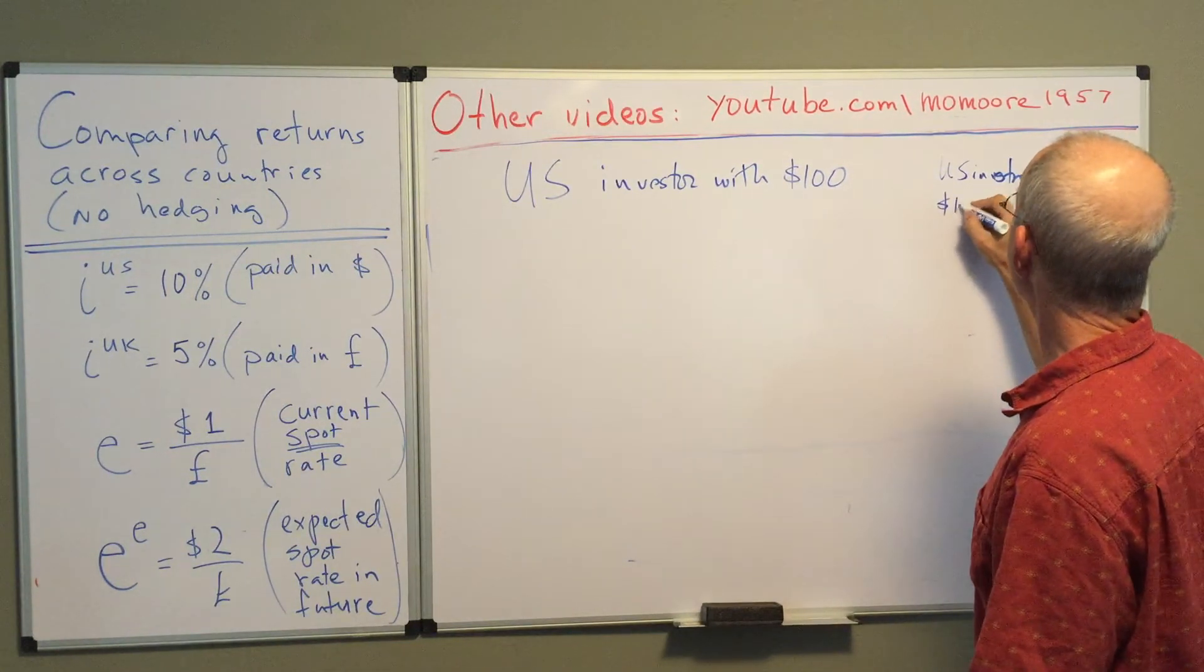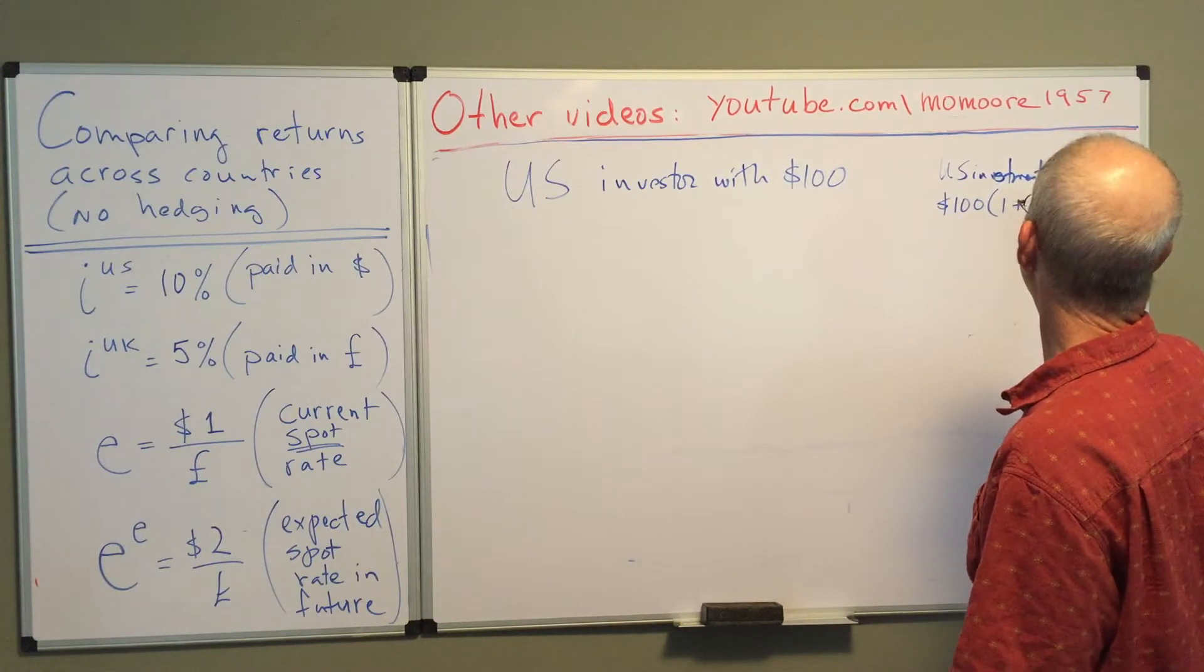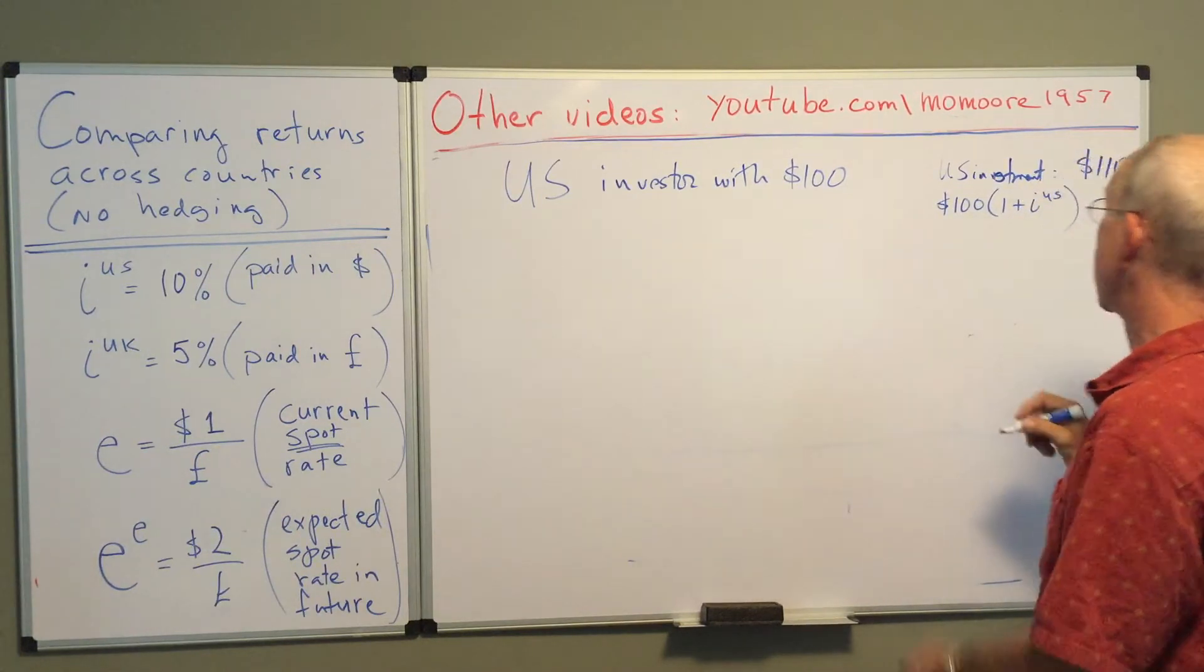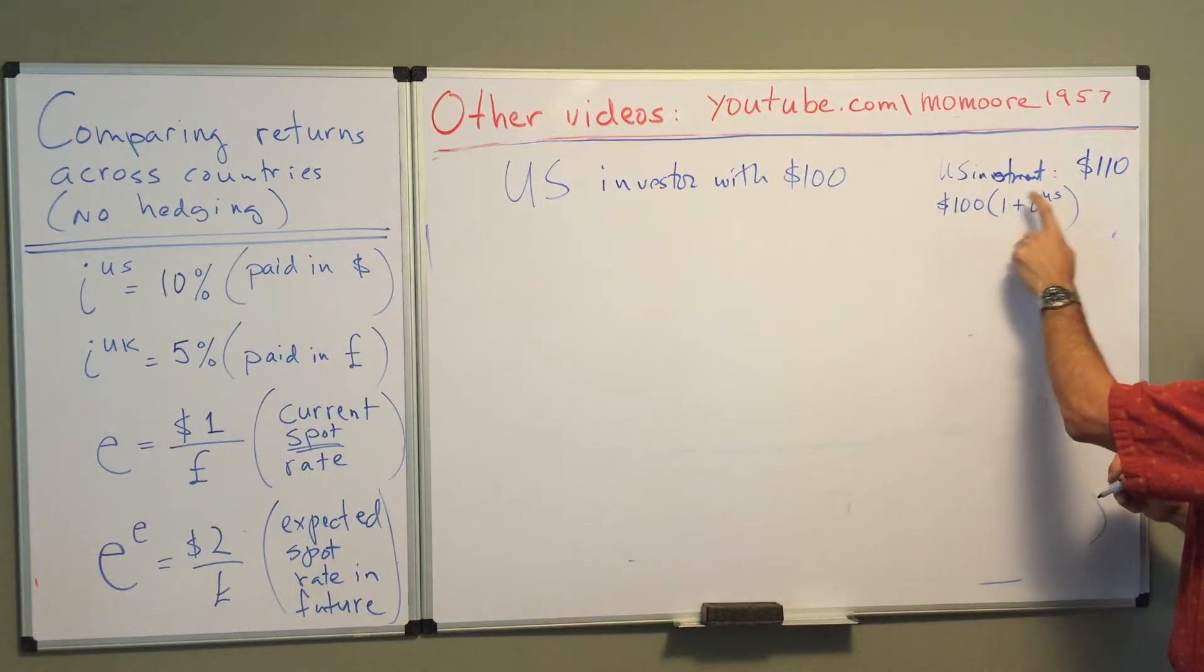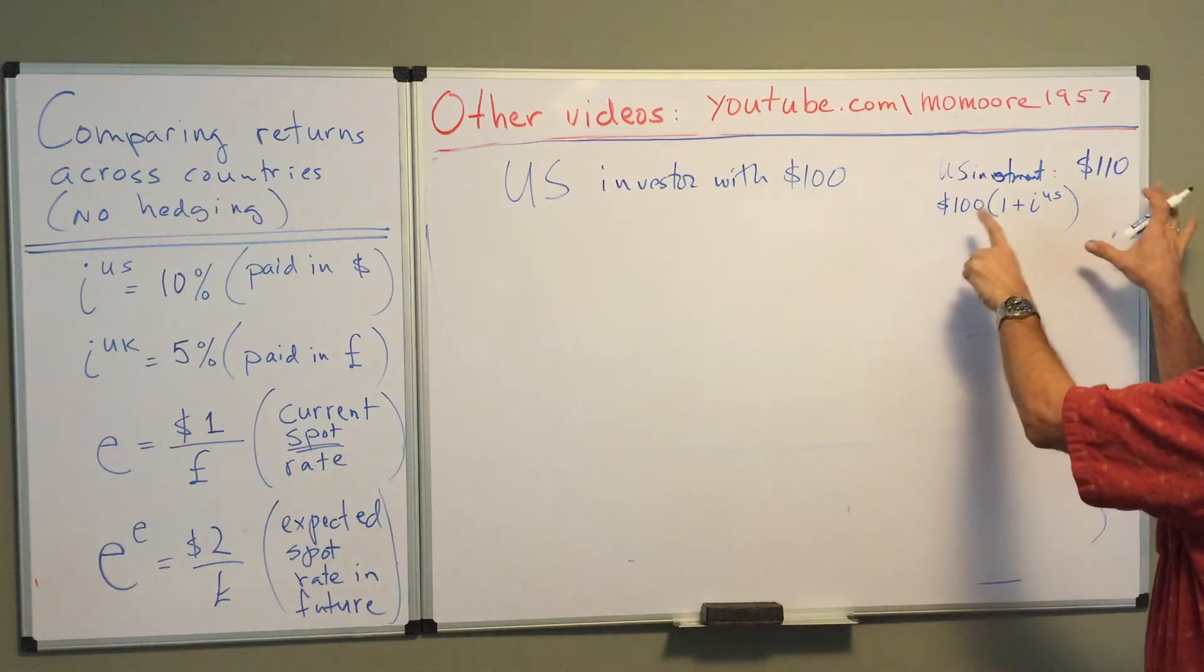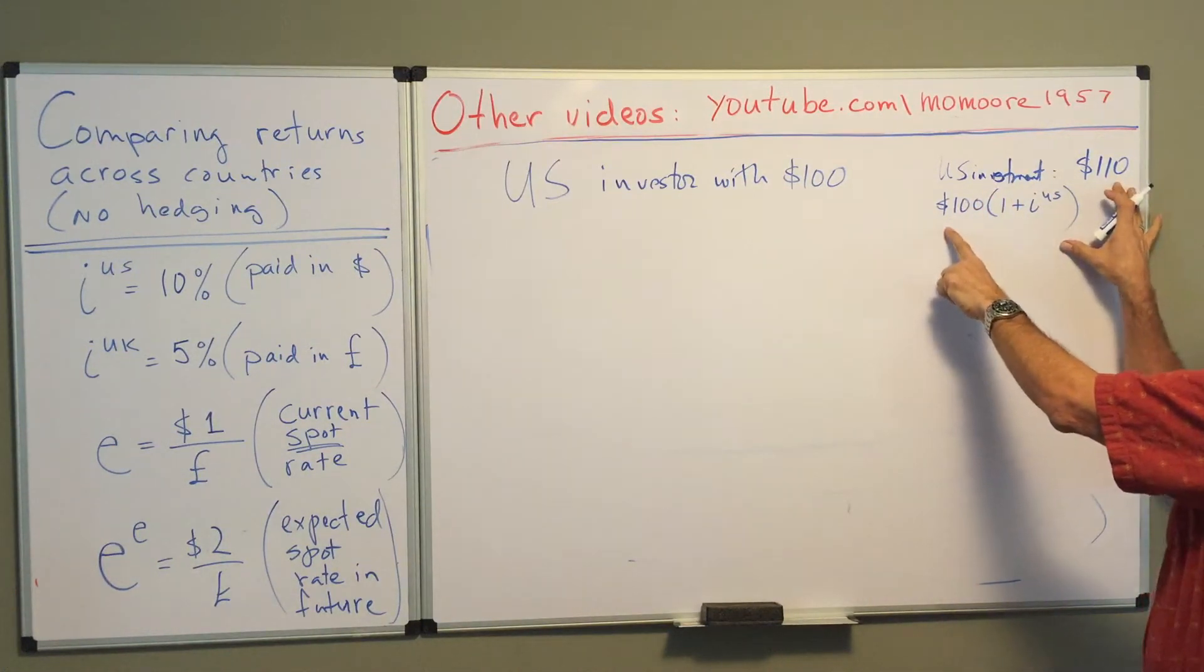So that's the one hundred dollars multiplied times one plus the U.S. interest rate. They're going to get their principal back, the hundred dollars, plus a hundred dollars times the U.S. interest rate. So this is the American return on the U.S. investment.